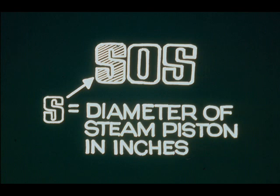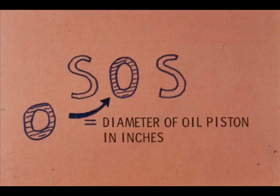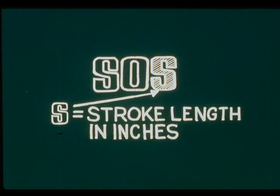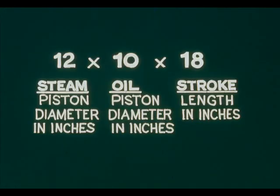The first number is the diameter of the steam piston in inches. The second number is the diameter of the oil piston in inches. The third number is the stroke length in inches. A 12 by 10 by 18 steam-driven reciprocating pump has a steam piston 12 inches in diameter, an oil piston 10 inches in diameter, and a stroke length of 18 inches.